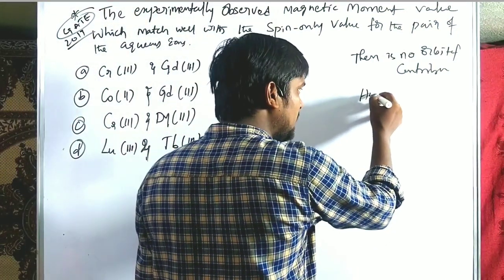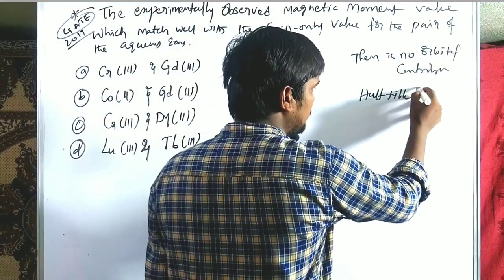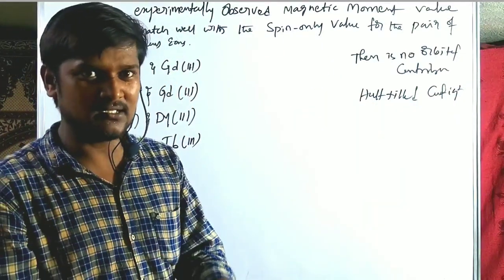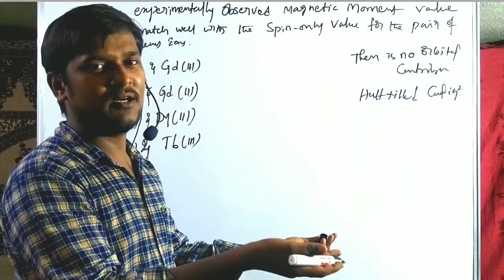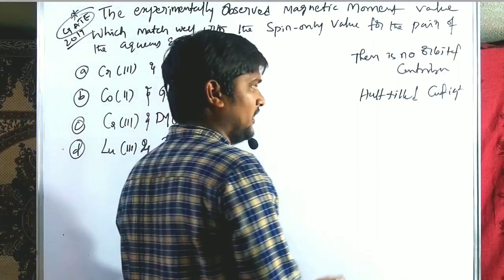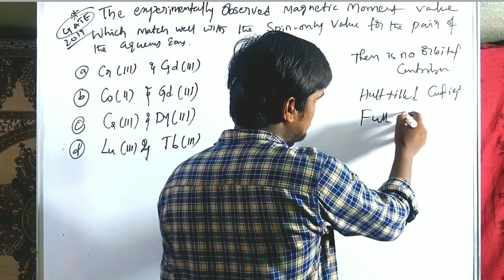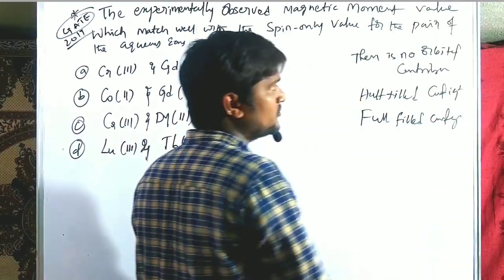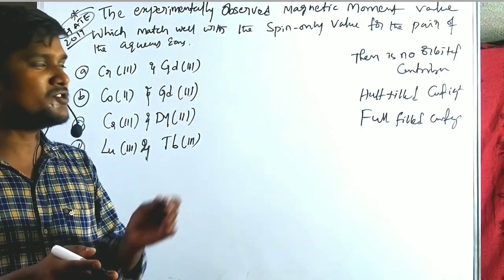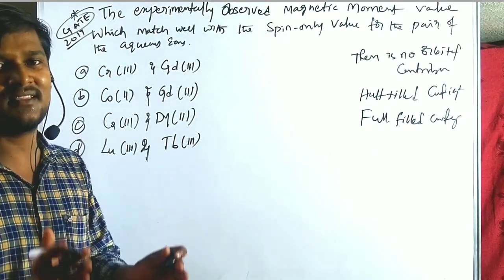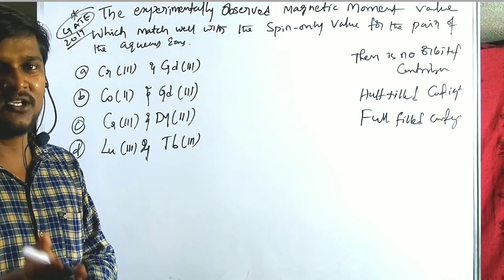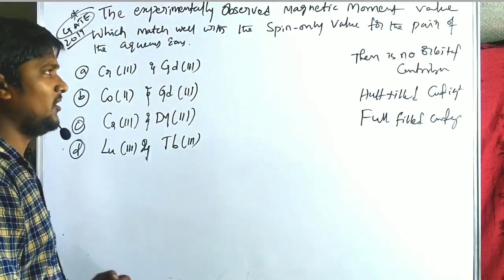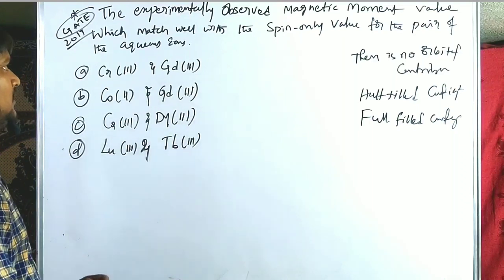When there is a fully filled or half-filled configuration in t₂g for d orbitals or f orbitals, there is no orbital contribution. We now evaluate which two metals have the same observed magnetic moment value as well as the spin-only magnetic moment value.